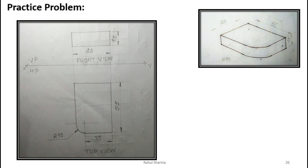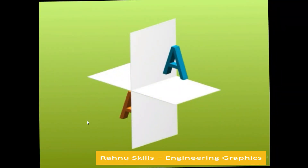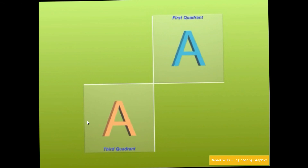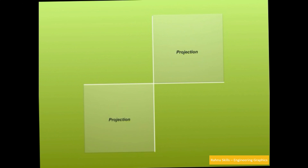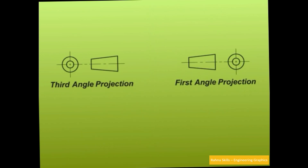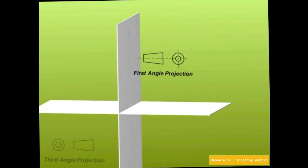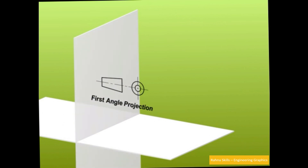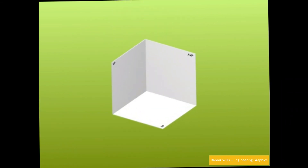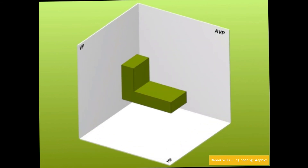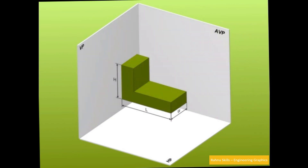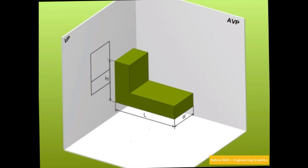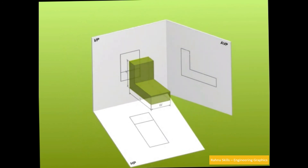Now we will learn orthographic projection with animations. We use only the first or third quadrant — mostly the first. If not specified, go for first angle projection. Some countries use third angle projection. The symbols to represent first angle projection and third angle projection are shown. For first angle projection we use VP, HP, and AVP (Auxiliary Vertical Plane), placing the object above HP and in front of VP.